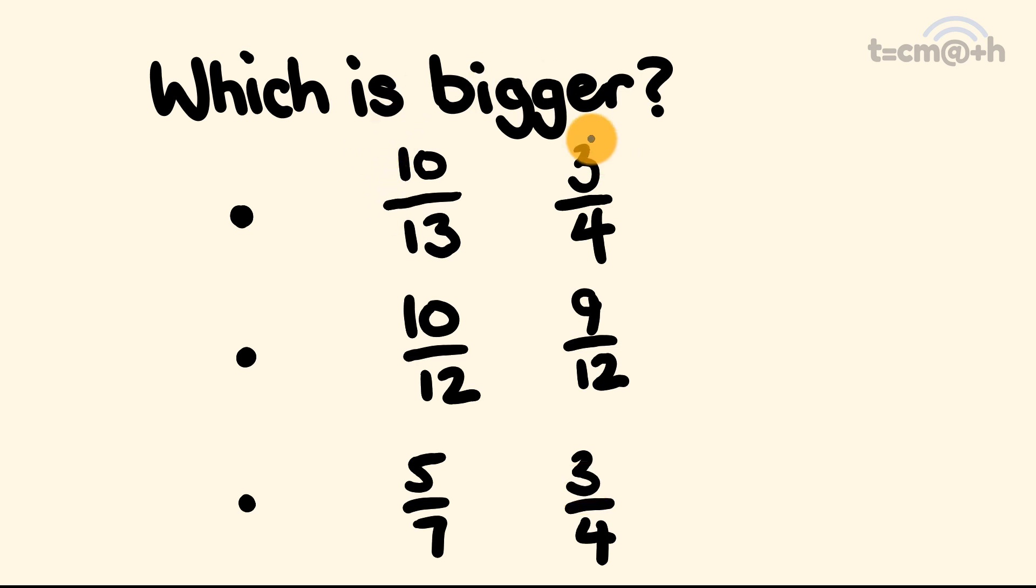So we have our first set of fractions. We have 10 over 13 and 3 over 4. Which is the biggest one? Let's work this out. 10 times 4 equals 40, and 13 times 3 equals 39. Well, 40 is bigger than 39, which means that 10 over 13 is bigger than 3 quarters.